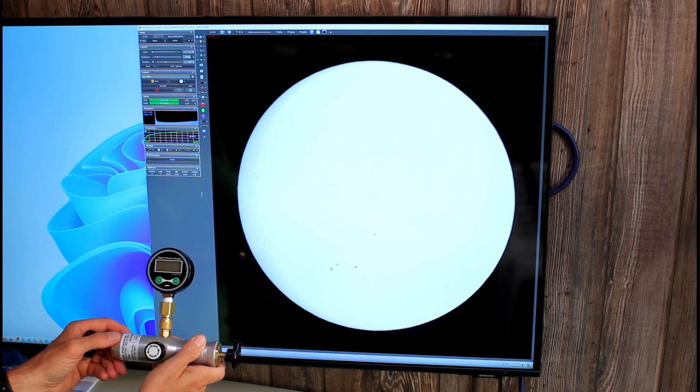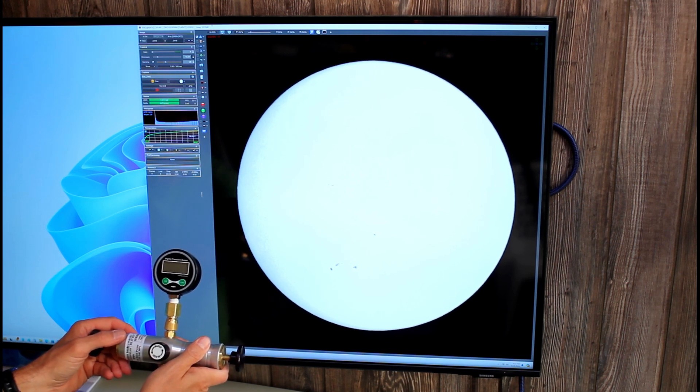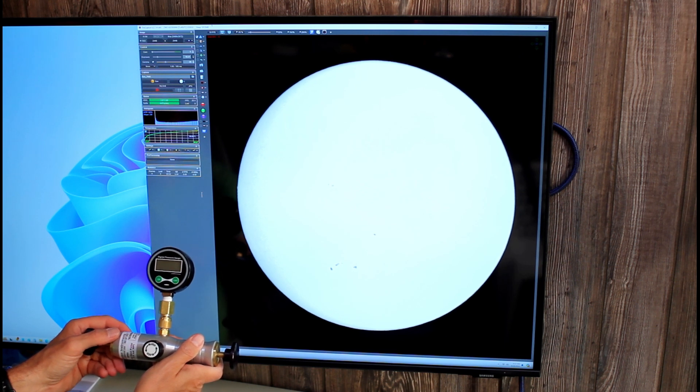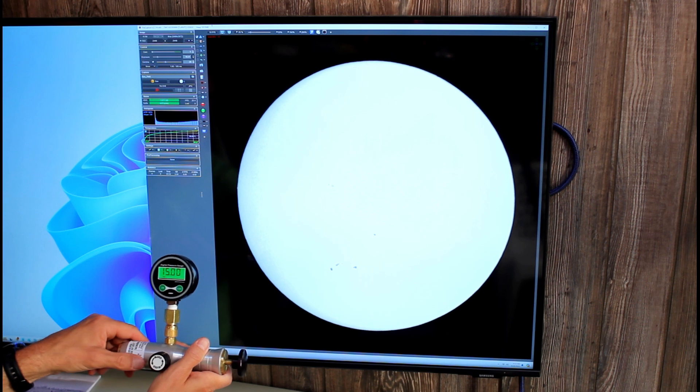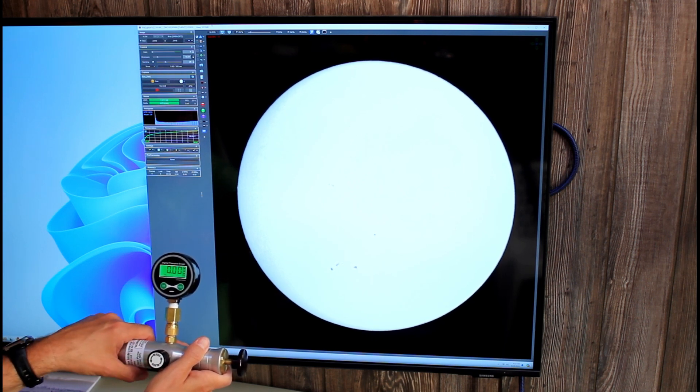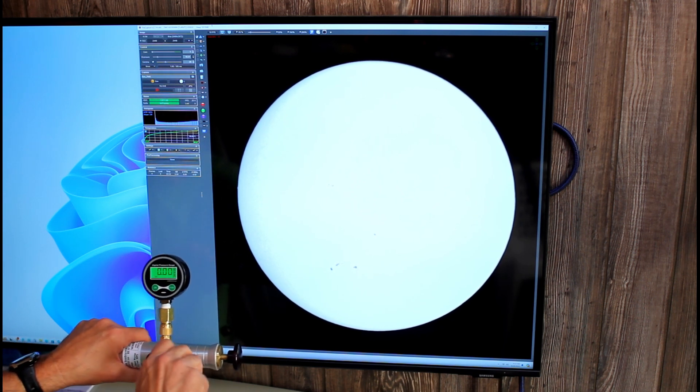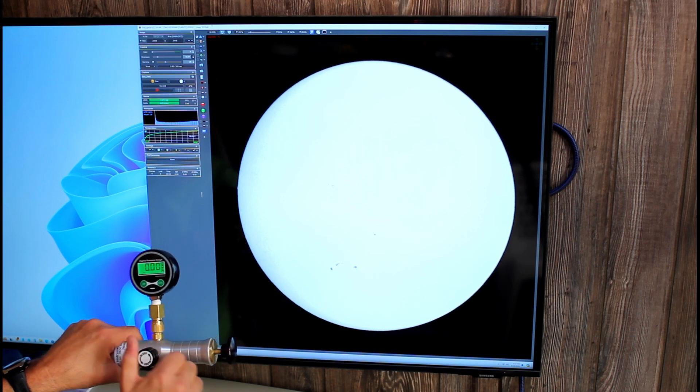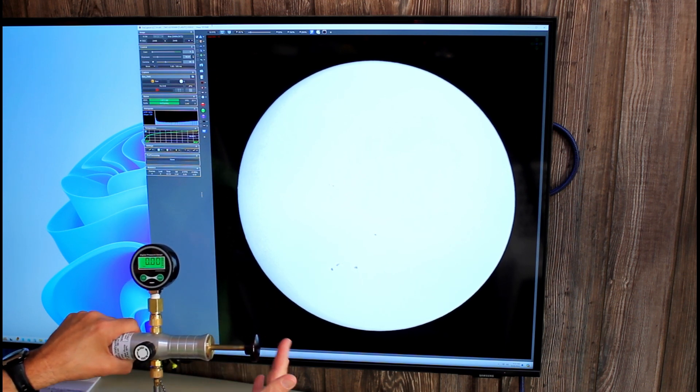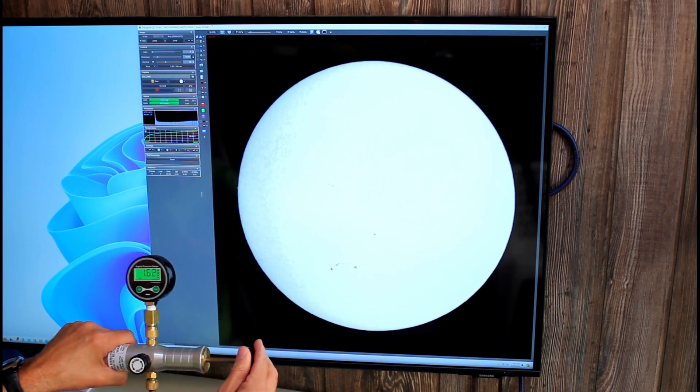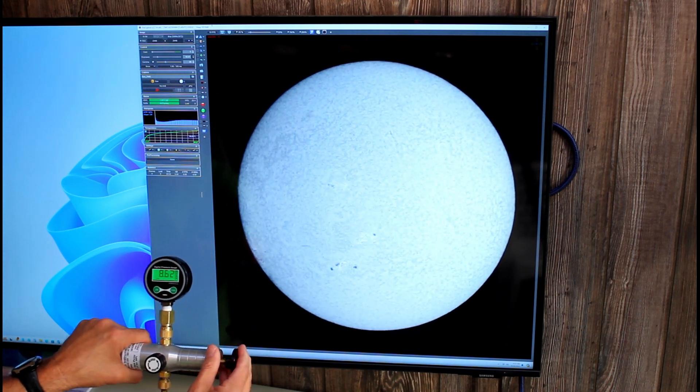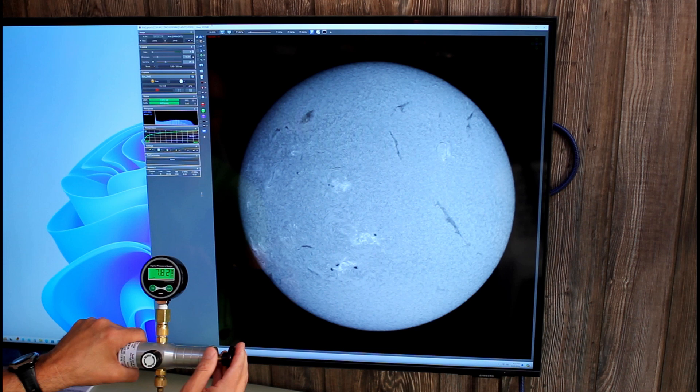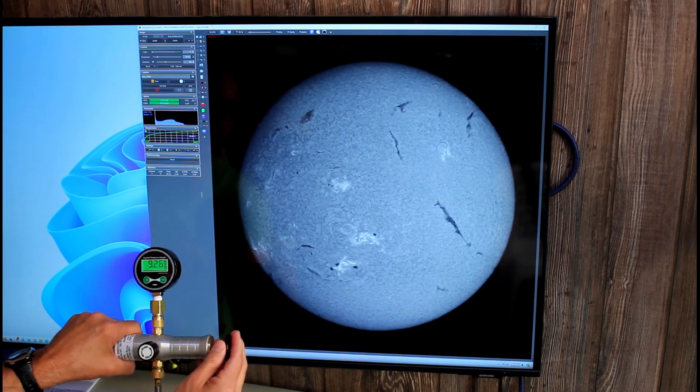In this case both etalons are being tuned with the same pressure. This was the simplest and cheapest solution for a double stack setup. So the first thing I do is turn on the pressure gauge and it shows 0 psi. Then I close the bleed valve and then I start pumping with the knob on the right and I get between 1 and 2 psi with each pump and I'm going to pump it up to about 10 psi where it comes on band.